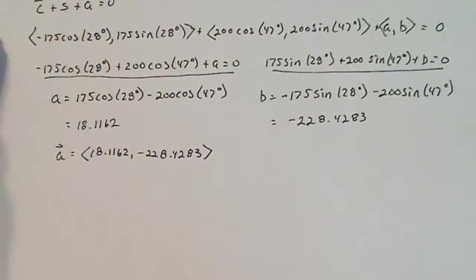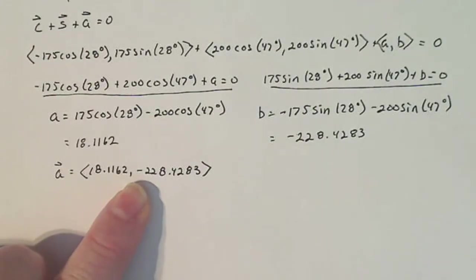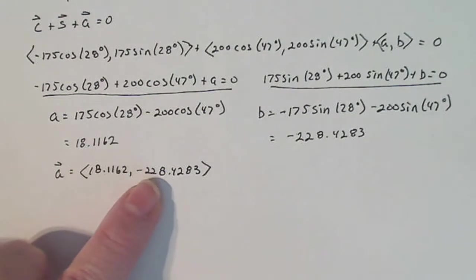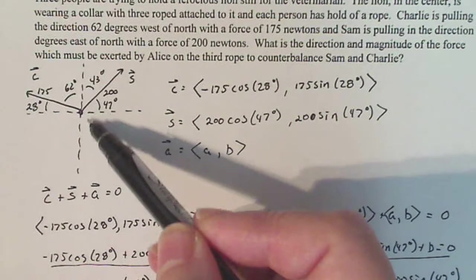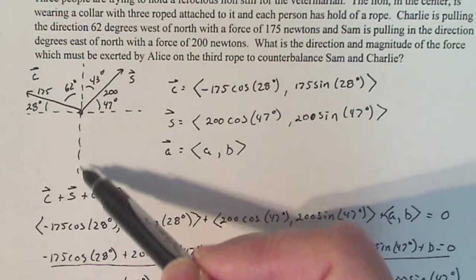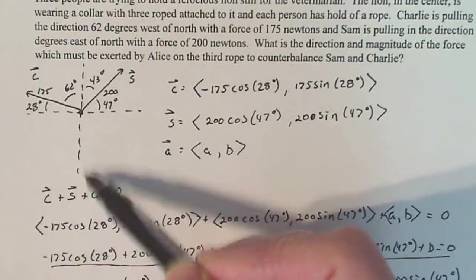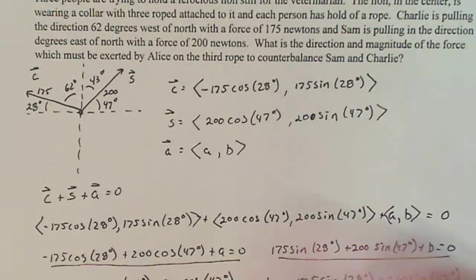So that means that Alice's vector should be equal to 18.1162, comma, minus 228.4283. Now, does that make sense? Well, that puts this in quadrant four, which was one of the parts that makes sense. I'm not moving very far out on the horizontal axis, but I'm moving really low down on the y-axis or vertical axis, but that also makes sense. So here I move a tiny bit, down here move way down. That makes sense that the vector would be this direction to keep the lion still.